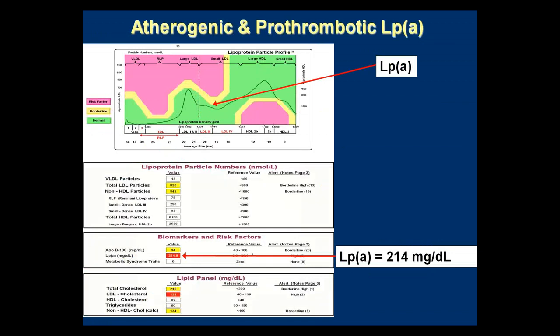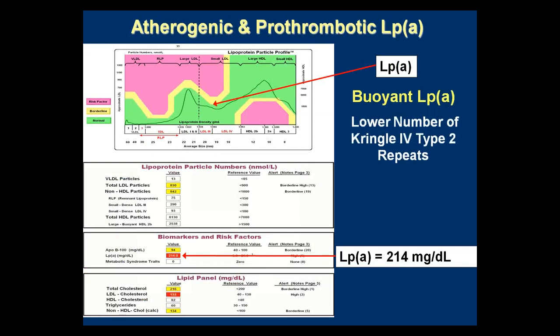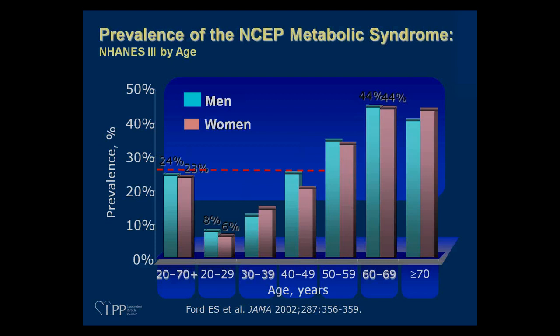Here is an example of a prothrombotic LP(a) — fairly far to the left, with a lot of Kringle type-2 repeats. It's a smaller LP(a) and it's prothrombotic.